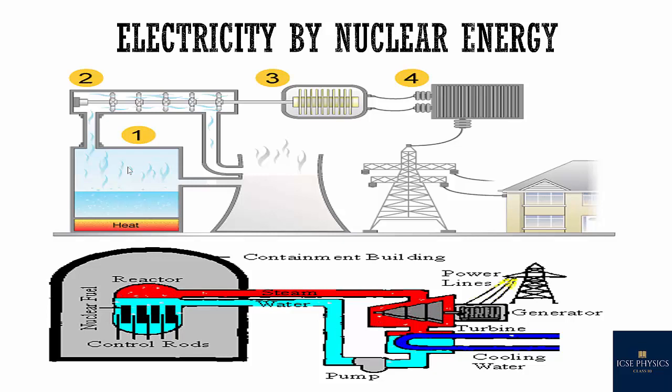The only difference between fossil fuel power plants and nuclear power plants is how the water is heated. Fossil fuel power stations burn a chemical fuel, while nuclear power stations use the fission of uranium nuclei to generate heat.